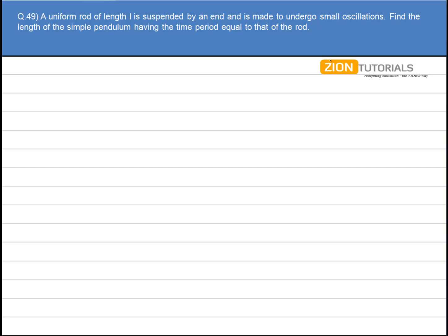A uniform rod of length L is suspended by an end and is made to undergo small oscillations. Find the length of the simple pendulum having the time period equal to that of the rod.